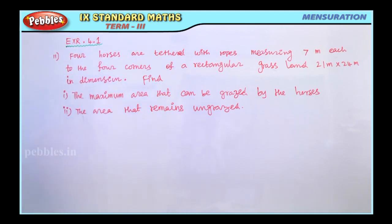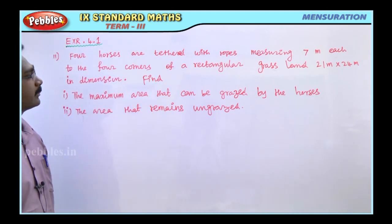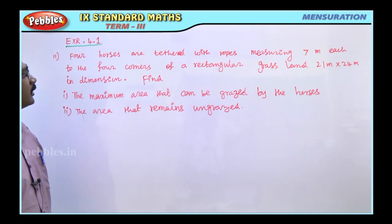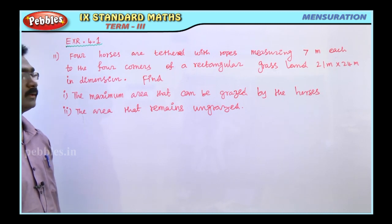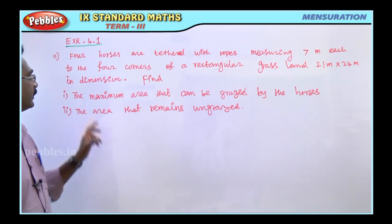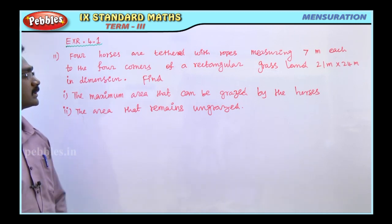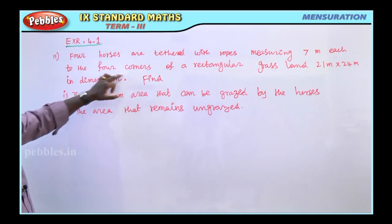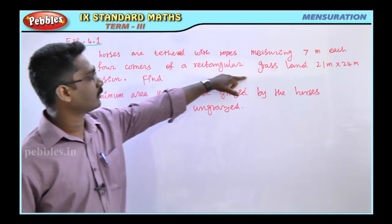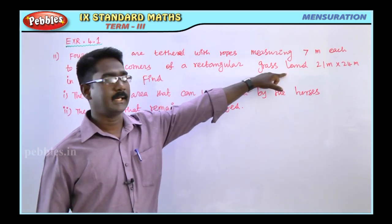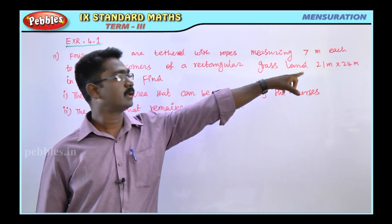Request number 11. Four horses are tethered with ropes measuring 7 meters each to the four corners of a rectangular grassland 21 meters by 24 meters. Find the maximum area that can be grazed by the horses, and the second part, the area that remains ungrazed — in this rectangular grassland of dimensions 21 by 24 meters.